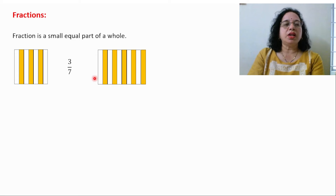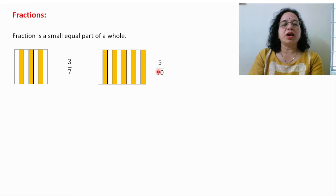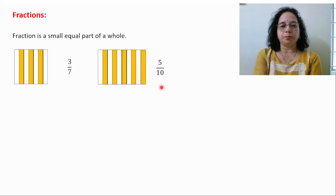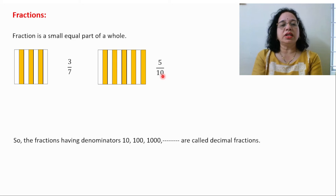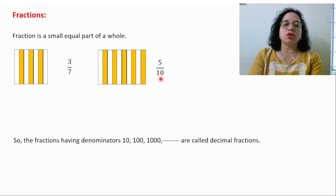Take one more example. The total number of parts are 10, and out of 10, five parts are shaded. So the fraction for the shaded part is 5 by 10. Now, when the denominators are 10, 100, or 1000, then such types of fractions are known as decimal fractions. This is also a fraction, but specifically we call it a decimal fraction.